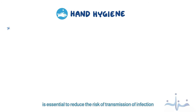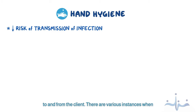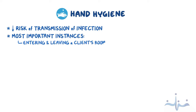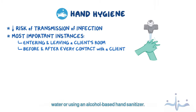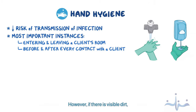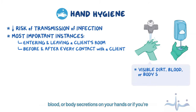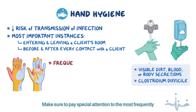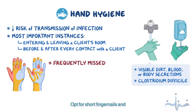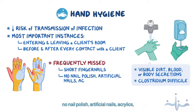As a quick recap: frequent and proper hand hygiene is essential to reduce the risk of transmission of infection to and from the client. The most important instances are upon entering and leaving a client's room and before and after every contact with a client. Hand hygiene can involve either hand washing with soap and water or using an alcohol-based hand sanitizer. However, if there is visible dirt, blood, or body secretions on your hands, or if you're assisting with the care of a client who has Clostridium difficile, hand washing with soap and water is required. Make sure to pay special attention to frequently missed areas like the back of your hands, between the fingers, and under or around your nails. Opt for short fingernails and no nail polish, artificial nails, acrylics, or jewelry.